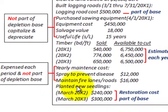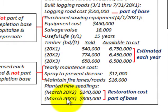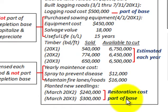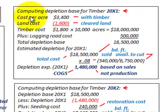Each year, they're going to plant some new seedlings — small trees that will grow up and mature into full-grown trees someday. This is done in March each year for 20x2 and 20x3. These are restoration costs and they are part of the depletion base. So let's look at how we compute our depletion base each year.